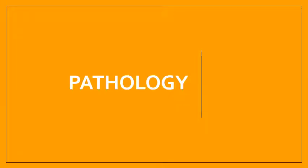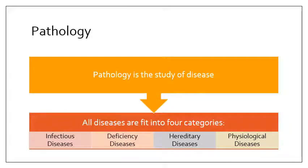We are going to be talking about pathology and learning a little bit more about disease, which is what pathology is all about. The number one thing we should know is what we mean when we say pathology. Pathology really is just the study of diseases. There are different categories of diseases because there are different things that can happen in your body, so we classify diseases into four main categories.